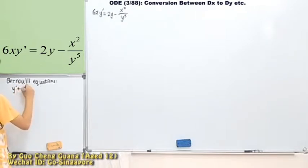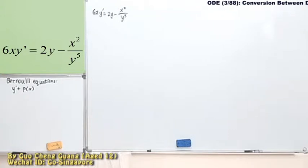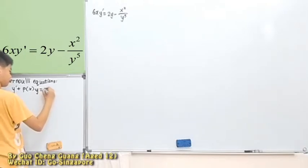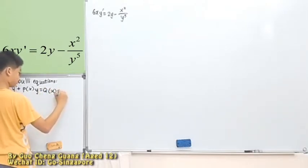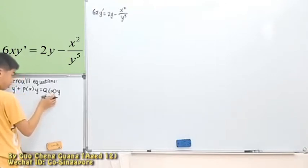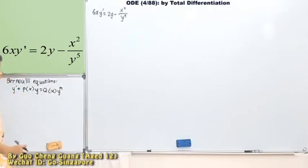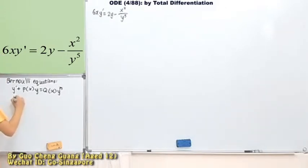Y prime, then plus p(x). p(x) is a function of x. Then times y equals q(x) times y to the power of n. At this point, what we'll use is to let. But to let we'll need another function. Just say for example u. u, we can let it be y to the power of 1 minus n.